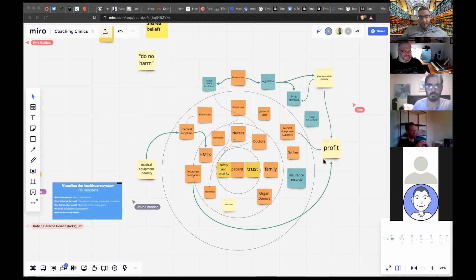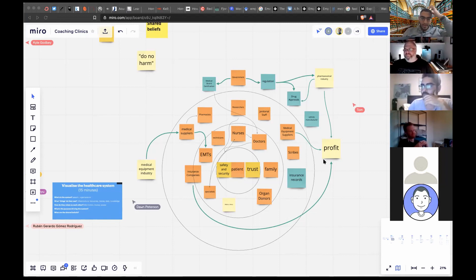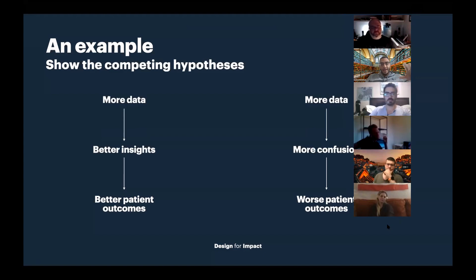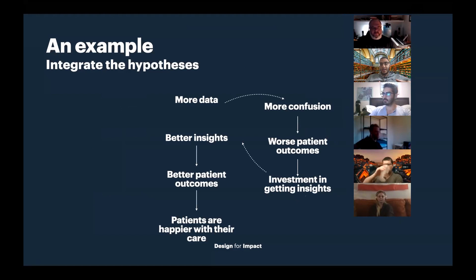We're going to talk quickly about creating hypotheses. Here are two competing hypotheses: one is 'more data equals better patient outcomes,' and the other is 'more data equals worse patient outcomes.' One person thinks more data will lead to better insights; the other thinks it will lead to more confusion.